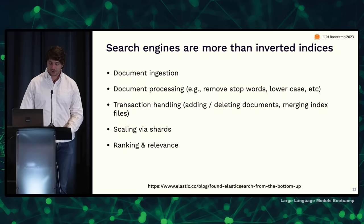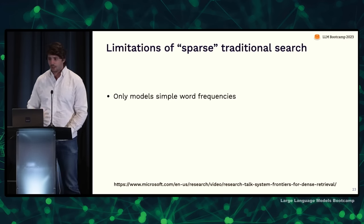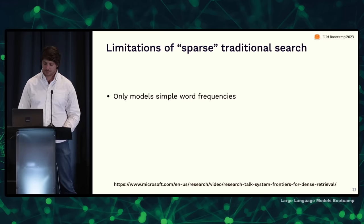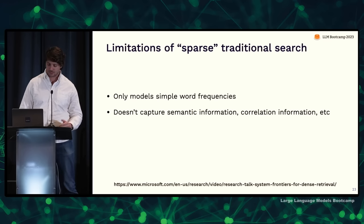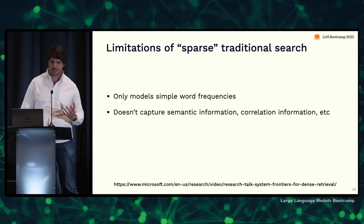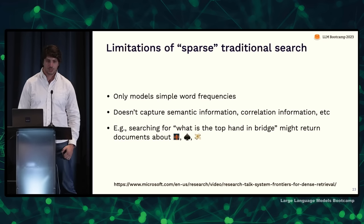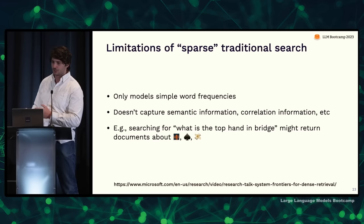Why do we need something more complicated than traditional search? Traditional search has fundamental limitations: it only models simple statistical correlations between words in queries and documents — things like word frequencies. It doesn't capture semantic information or cross-correlations between terms. For ambiguous queries like 'what is the top hand in bridge,' you might get documents about all different uses of the word 'bridge,' rather than bridge the card game.